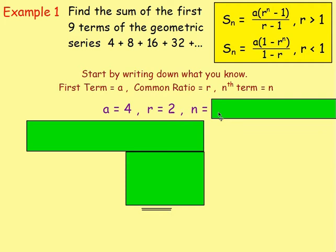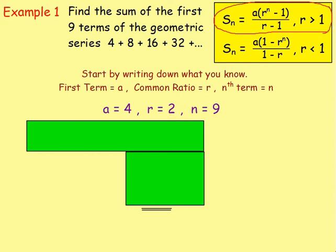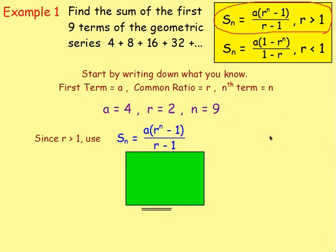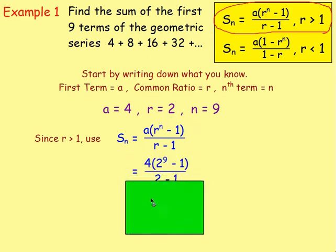And n is going to be 9 because we want the sum of the first 9 terms. Because r is bigger than 1, you're best to use the formula at the top. So the sum of the first n terms equals a bracket r to the power of n take away 1, close bracket, over r take away 1. Replace a with 4, n with 9, and r with 2. That gives you 4 times 2 to the power of 9 take away 1, over 2 take away 1. Put that into your calculator.